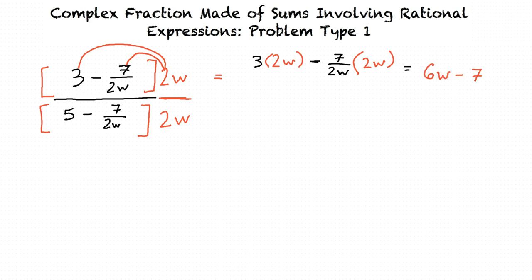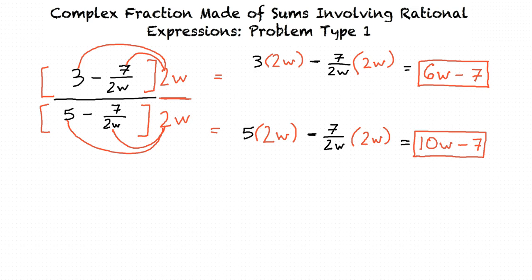Let's do the same thing in the denominator. We'll distribute the 2w into the first term of 5, and to the second term of 7 over 2w. And after doing so, the result is 5 times 2w minus 7 over 2w times 2w. This simplifies to 10w minus 7.